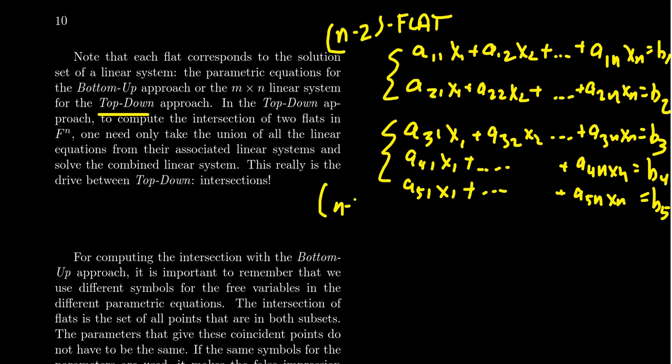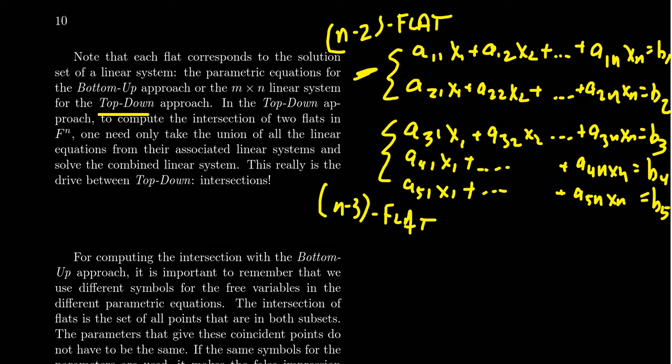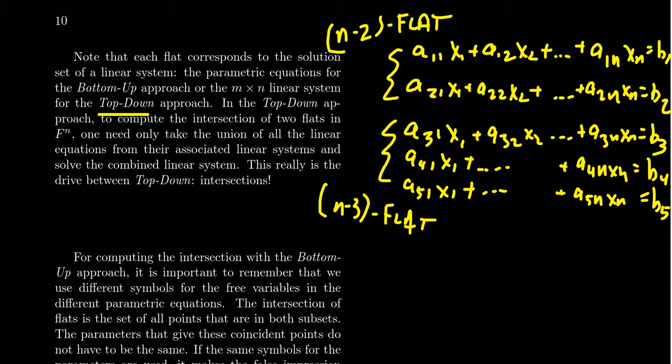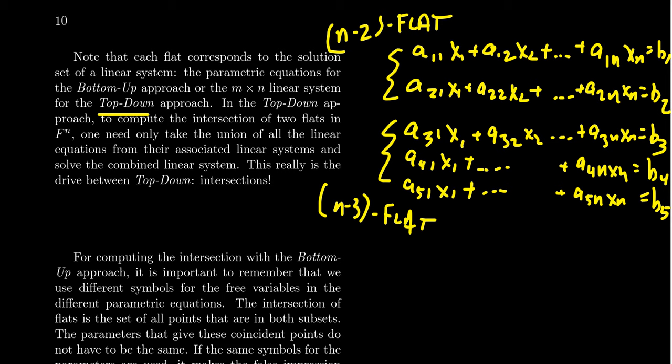This right here is representing some type of n minus 2 flat, and this is the intersection of two hyperplanes. The second one is the intersection of three hyperplanes, representing an n minus 3 flat. If we want to intersect these two flats together, well, guess what? The top-down approach was designed for intersections. By construction, we build flats by intersecting hyperplanes. So if we have an intersection of two hyperplanes and an intersection of three hyperplanes, we just put all of the equations together.